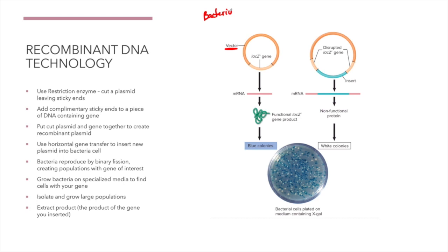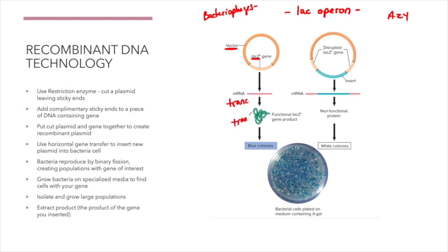Bacteriophages are also vectors — they are viruses that attack bacteria. In this plasmid vector, we have a circular piece of DNA. In our gene regulation lecture, we looked at the lac operon, which is located on plasmids. This particular vector contains the lac operon and within it the lac Z gene — one of the A, Z, and Y genes found on the lac operon. If we put this plasmid into a bacterial cell, the bacterial cell would transcribe and translate it to make a protein.